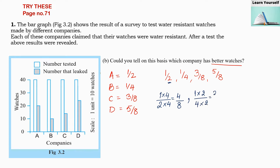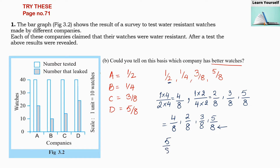If you have any doubt about this, please check my video on comparing fractions. So now we have four fractions: 4/8, 2/8, 3/8, and 5/8. When denominators are the same we only look at the numerator — the bigger numerator means a bigger fraction. So 5/8 is the biggest, then 4/8, then 3/8, and 2/8 is the smallest.